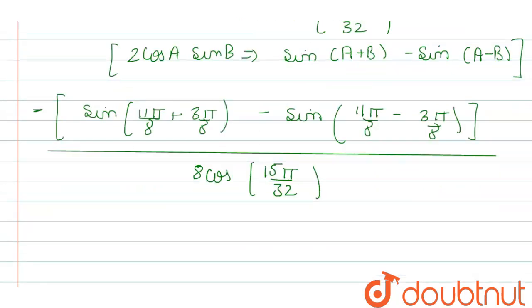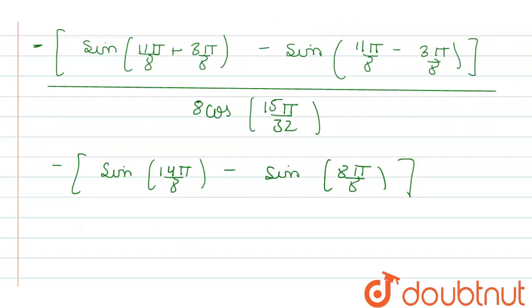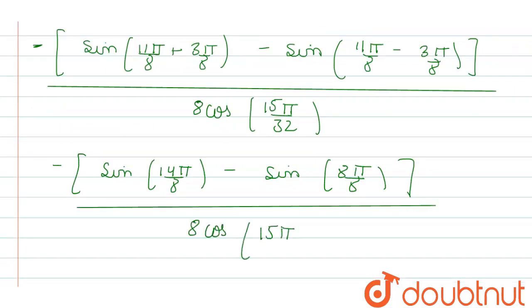From here our term becomes −[sin(14π/8) − sin(8π/8)] divided by 8cos(15π/32).